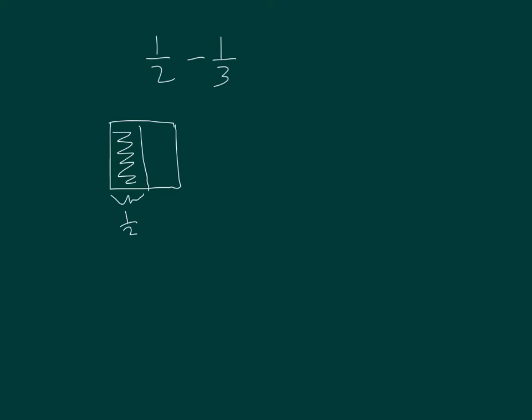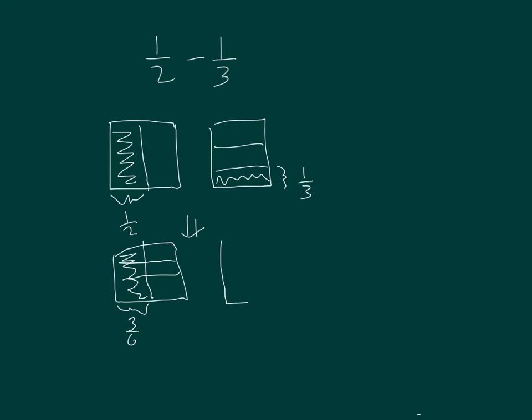Next, I'll model 1 third with horizontal lines. Next, I'll make equivalent units. 1 half and two more horizontal lines. I have 3 sixths. And with 1 third, I have 2 sixths.